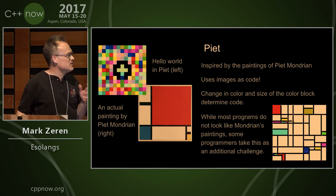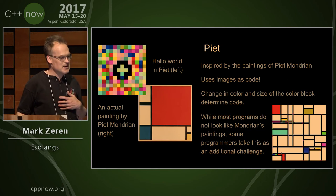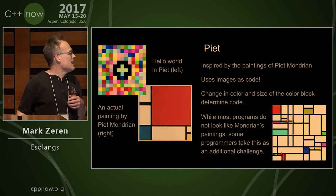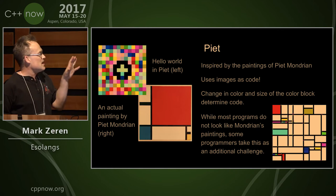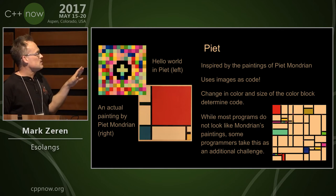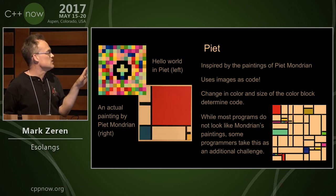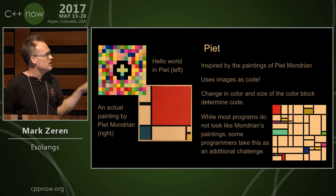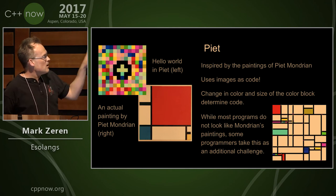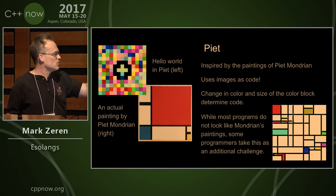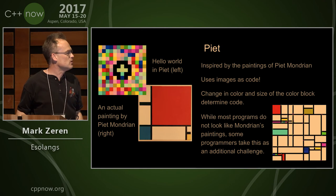The next one is Piet, which is named after Piet Mondrian, and this uses image-based code. Groups of same-color pixels transition to other groups, and the instruction is encoded in the change in color and intensity. Normally Hello World might look like the top left, but if you're creative you can make it look like the artist's paintings on the bottom right.